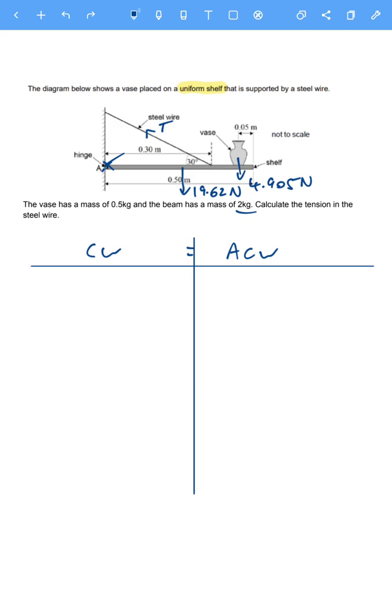Clockwise, let's go from left to right. From the hinge, the first force we come to is the weight of the beam, which is 19.62 newtons. We need to do the force, 19.62 newtons, multiplied by the distance. We've got the distance in the middle, so half of 0.25, which is a quarter. So that's the first moment done.